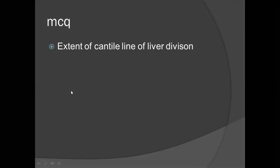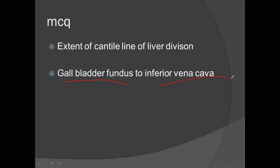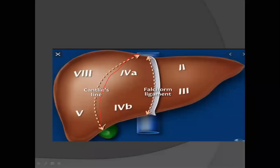Cantlie's line has been asked 3 to 4 times. Cantlie's line is the line dividing the liver. Remember that the inferior vena cava is on the Cantlie's line, and it extends from the inferior vena cava to the fundus of the gallbladder.